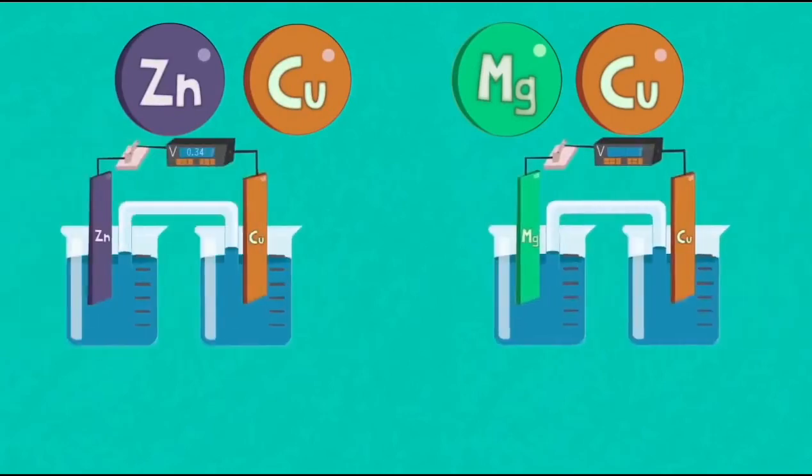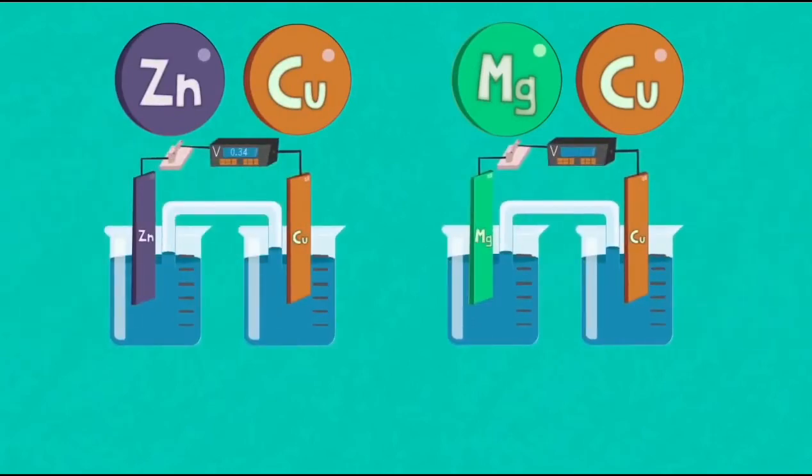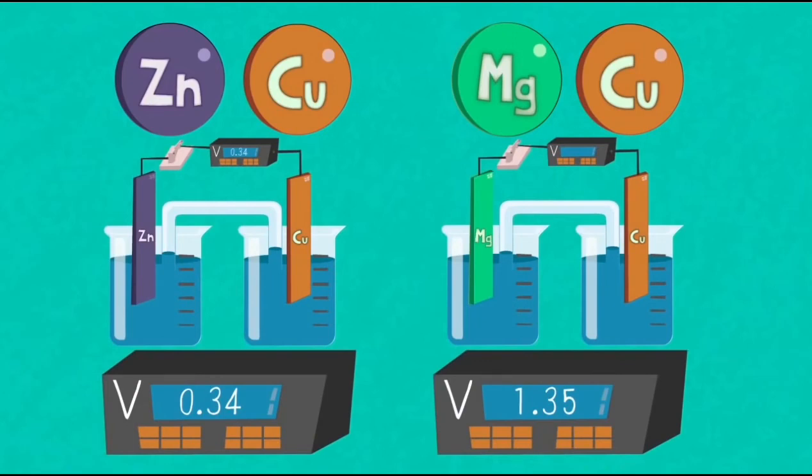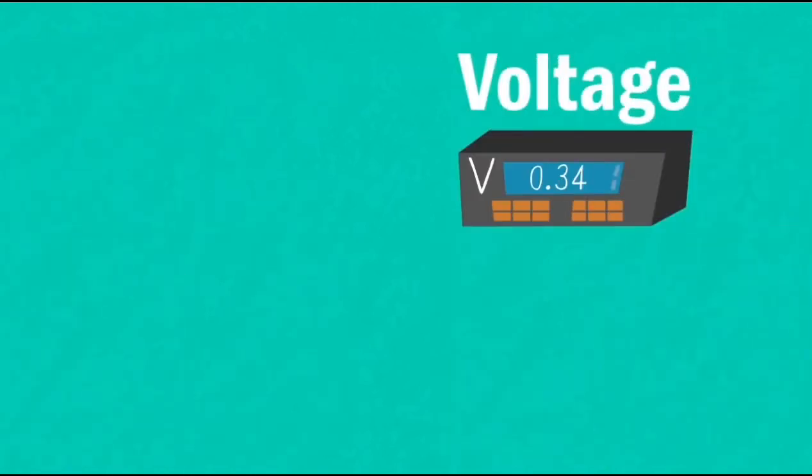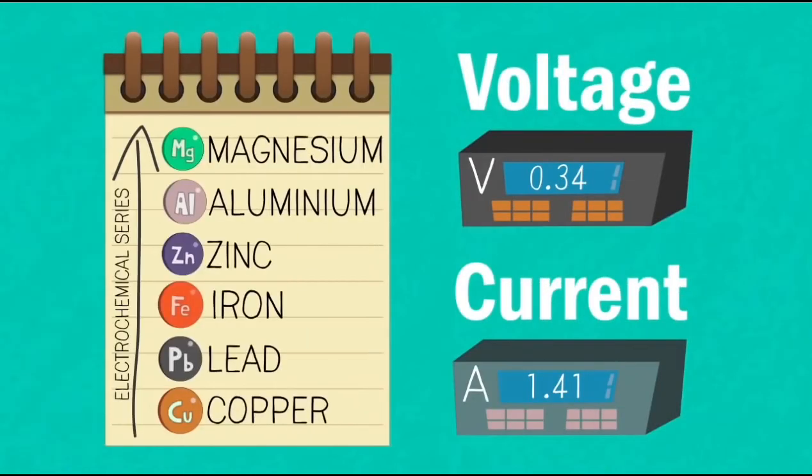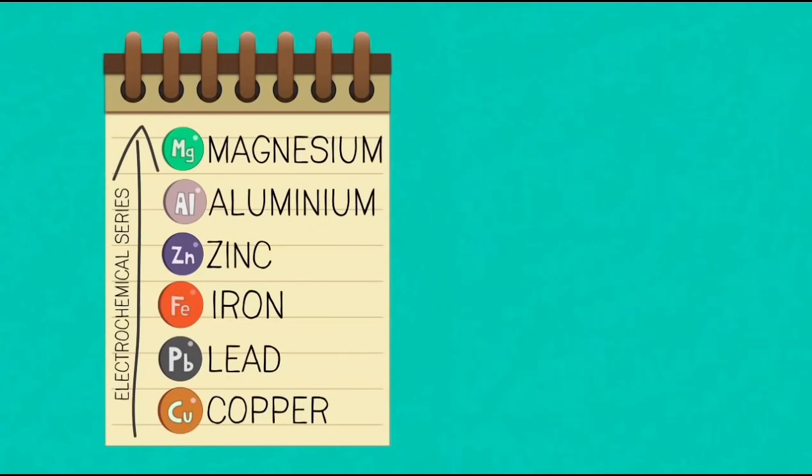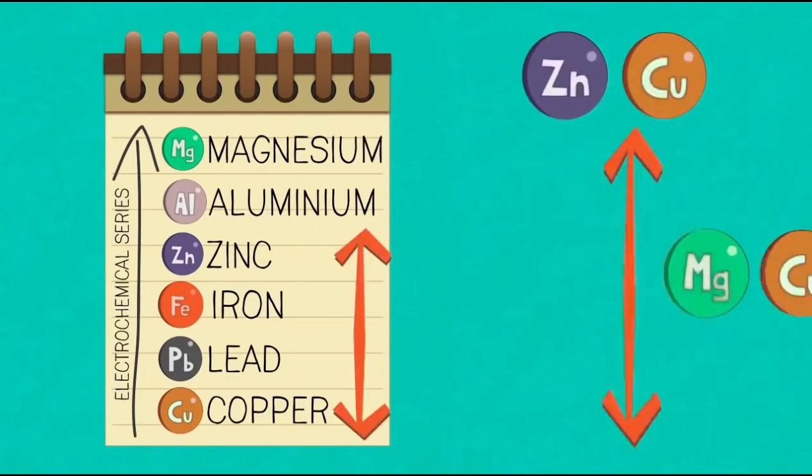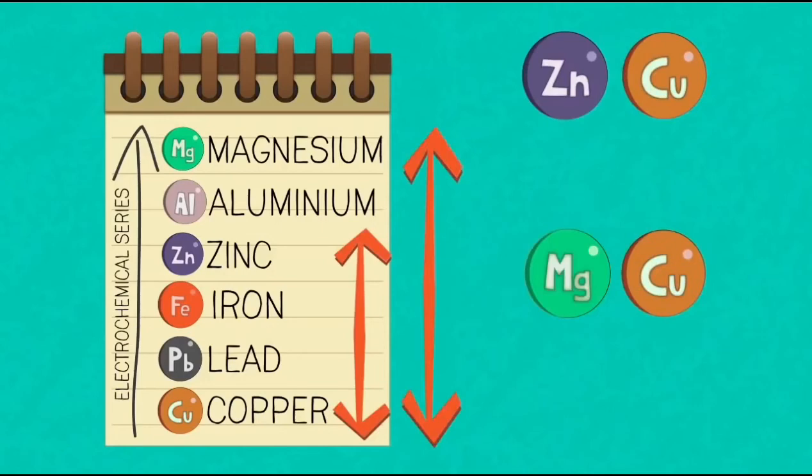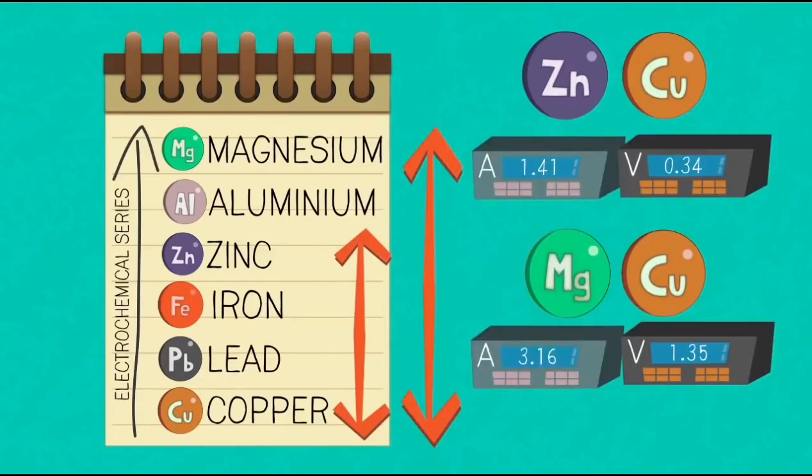In summary, what have we learned? One, different combinations of metals connected in an electrochemical cell will produce different voltages. Two, the size of the voltage and the current is dependent on the metal's position in the electrochemical series. And three, the further apart the metals are in the electrochemical series, the greater the size of the current and the voltages produced.